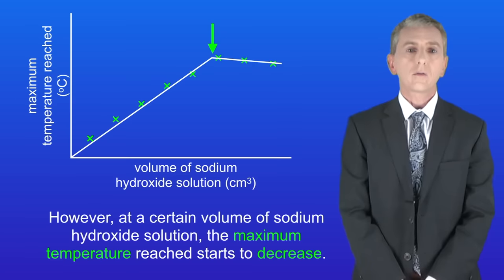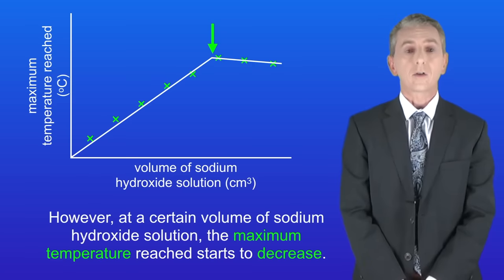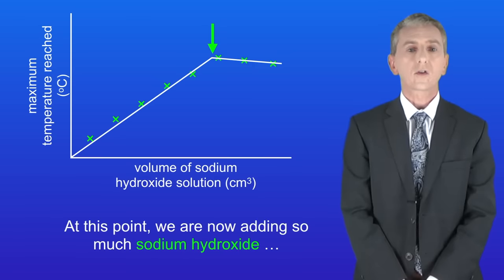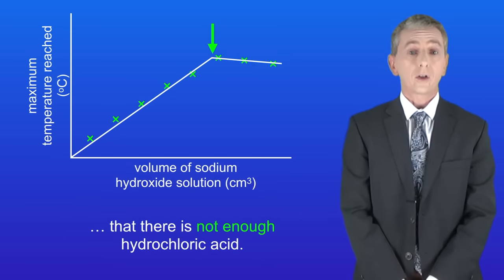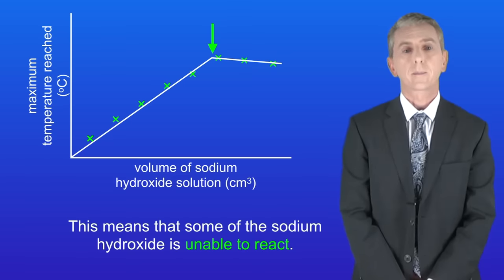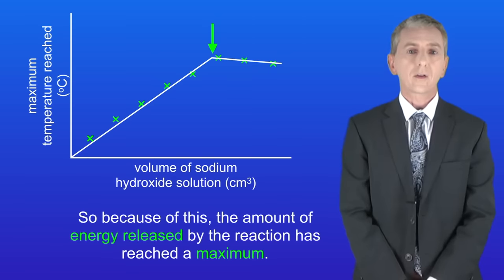However at a certain volume of sodium hydroxide solution the maximum temperature reached starts to decrease. At this point we're now adding so much sodium hydroxide that there's not enough hydrochloric acid. This means that some of the sodium hydroxide is unable to react. So because of this the amount of energy released by the reaction has reached a maximum.